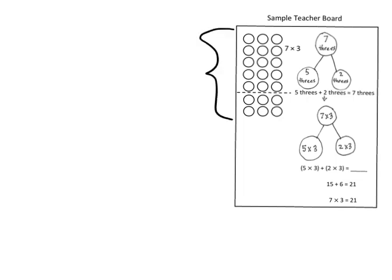We've got here a five times three and here is a two times three, but over here it's written in labels. So seven threes is equal to five threes plus two threes.